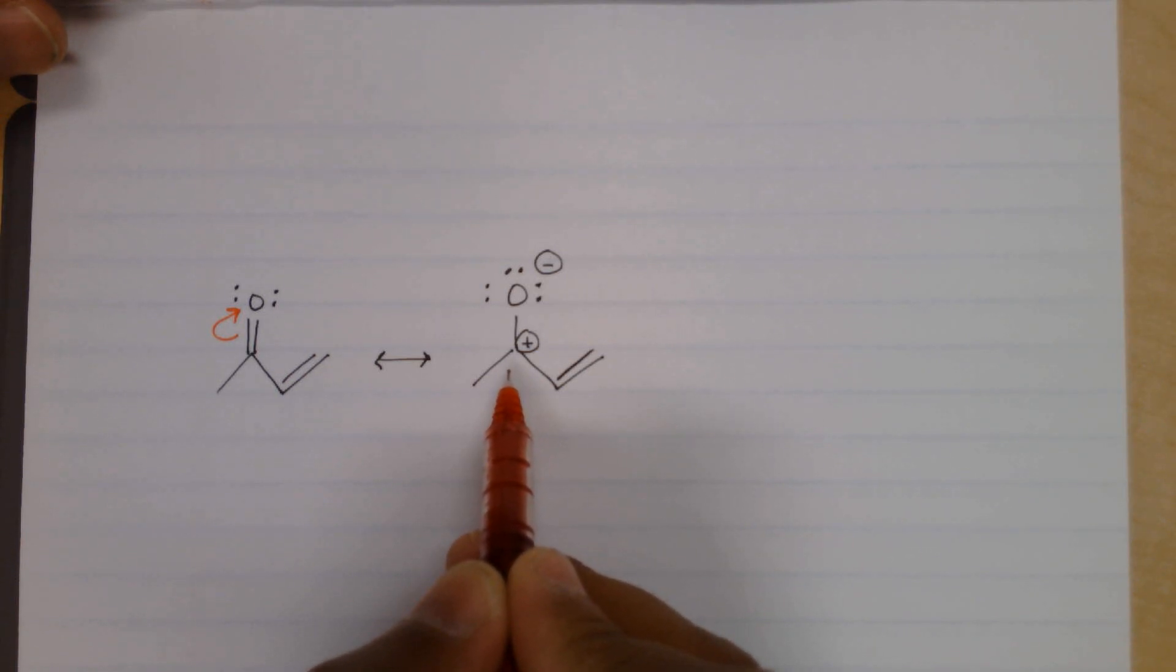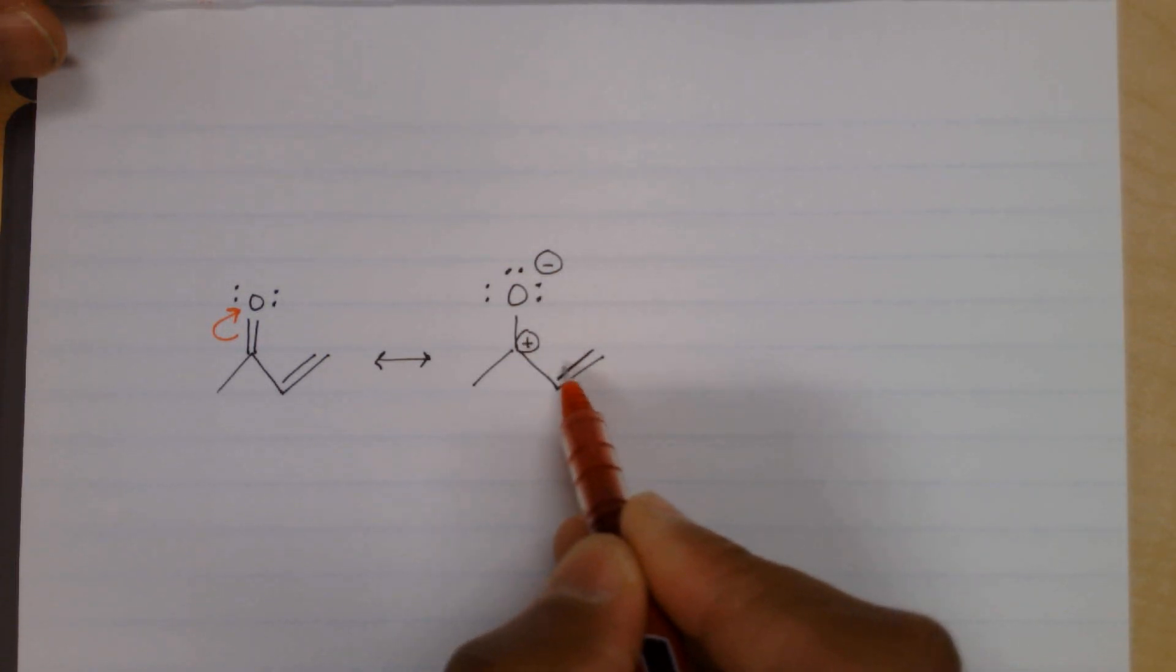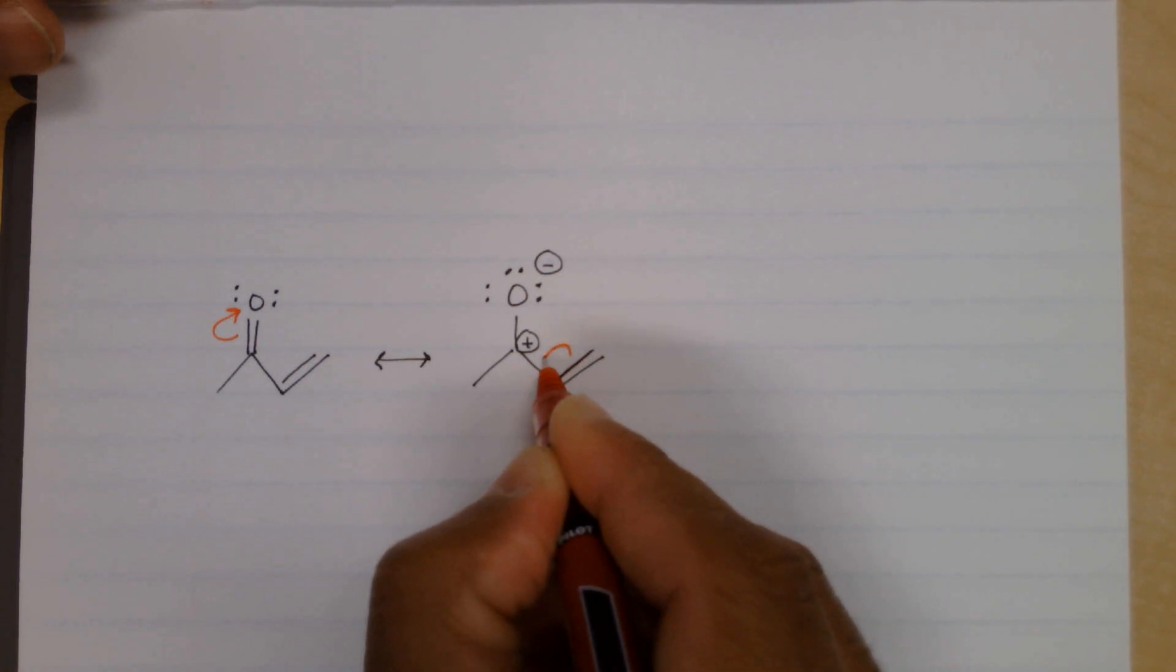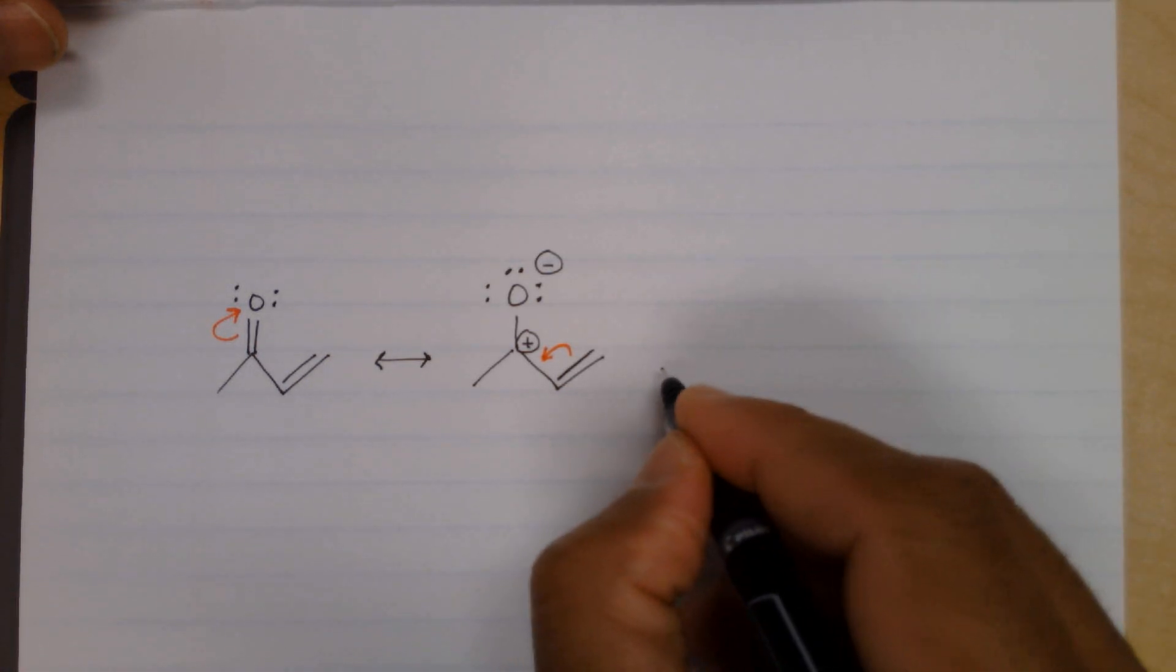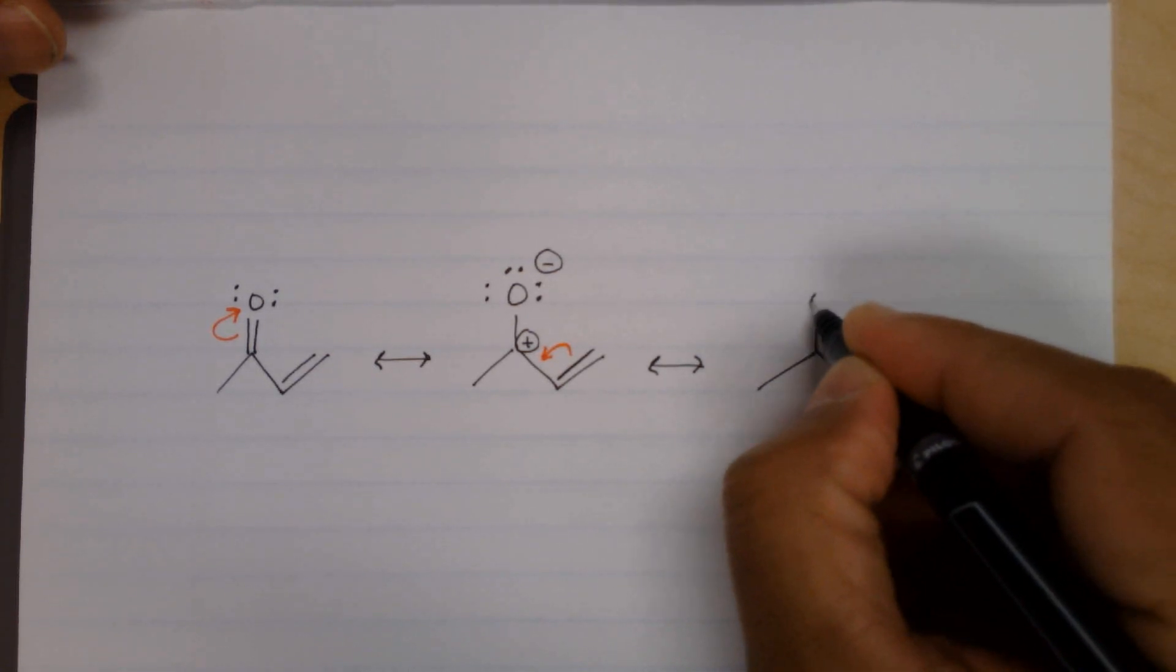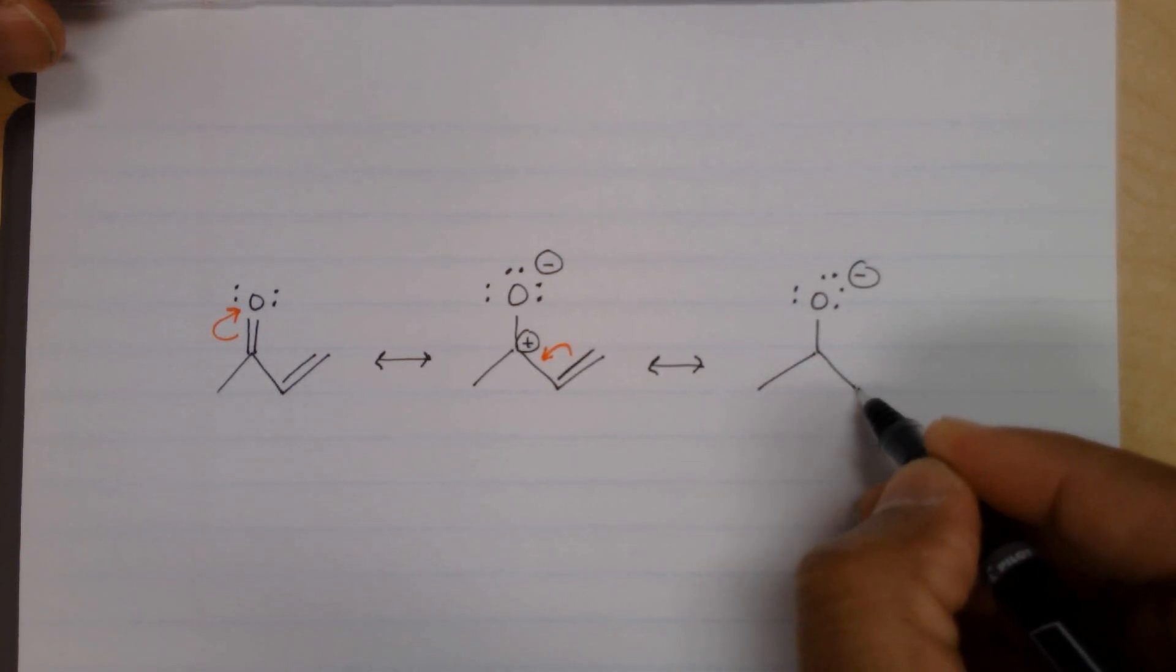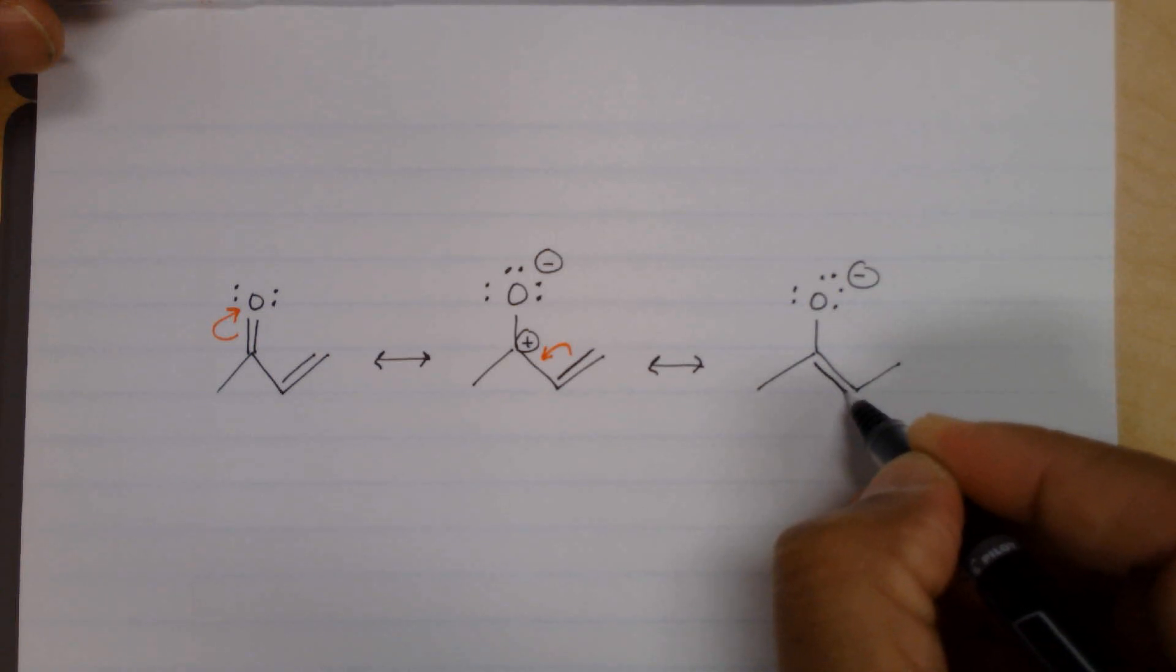So remember what that means: that carbon is still sp2 hybridized, but it has an empty p orbital that's going to allow these pi electrons to spread out here. So you can draw an arrow from the double bond going in between those atoms. The oxygen on top stays the way it is. We'll draw it with the formal charge of negative. Now there's a double bond here.